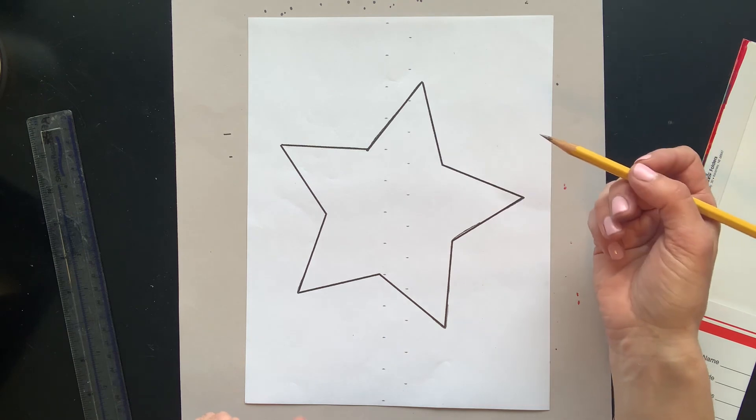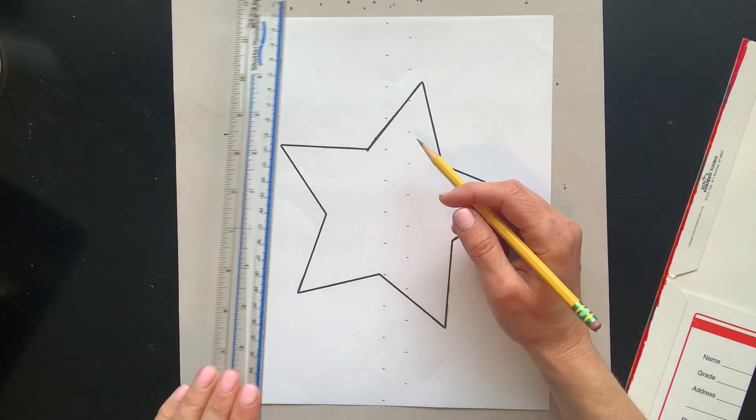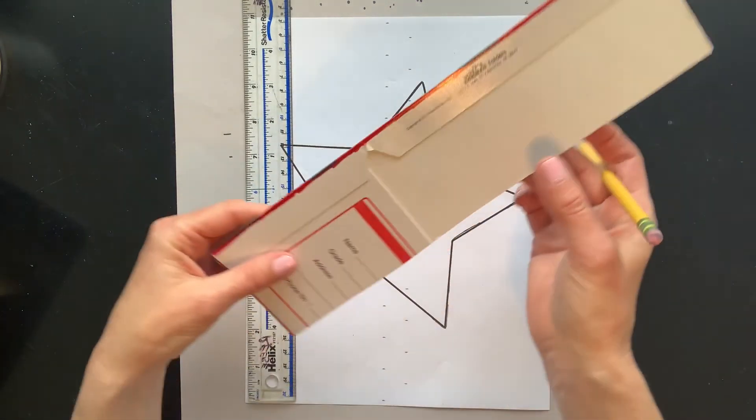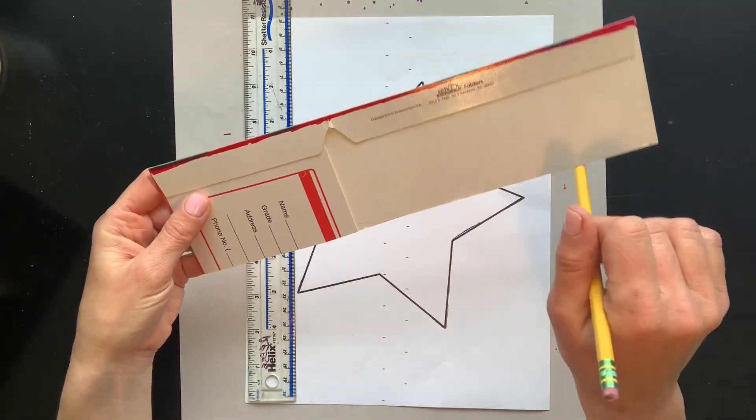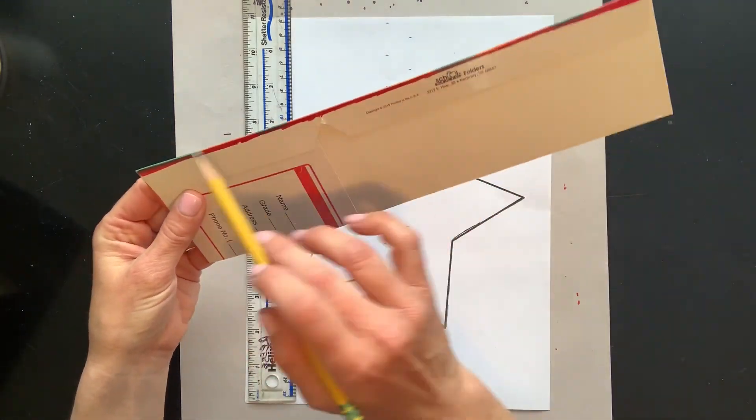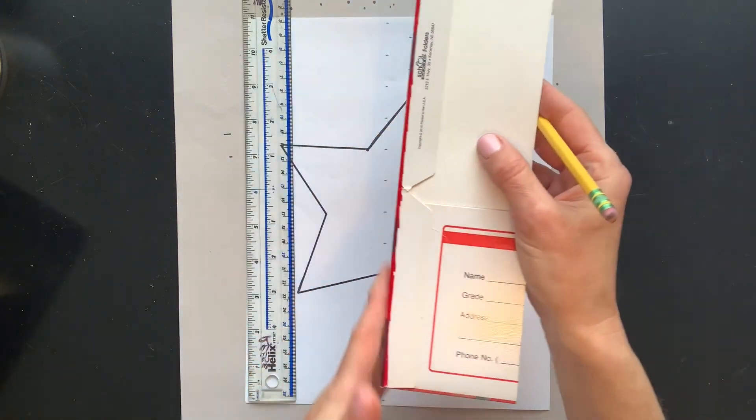We're going to add a grid in our background. To do that, you need a ruler or some kind of straight edge. If you don't have a ruler, find a folder, cut it, and use the half that you did not cut as your straight edge.